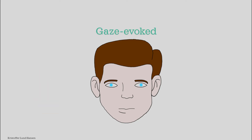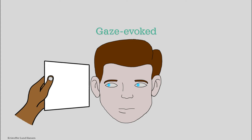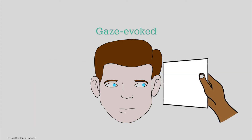One important point: nystagmus can often be suppressed by focusing on an object. Therefore we also want to observe the patient's eyes while they are not focusing on anything. Tell the patient to look to the side — which side does not matter — then hold up a blank piece of paper beside the patient's head and tell them to try to focus on the wall as if the paper was not there. This makes it much harder for the patient to focus. You will have to test both sides; that is very important.